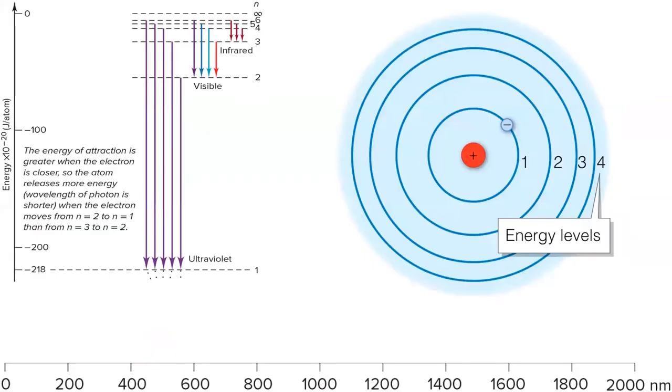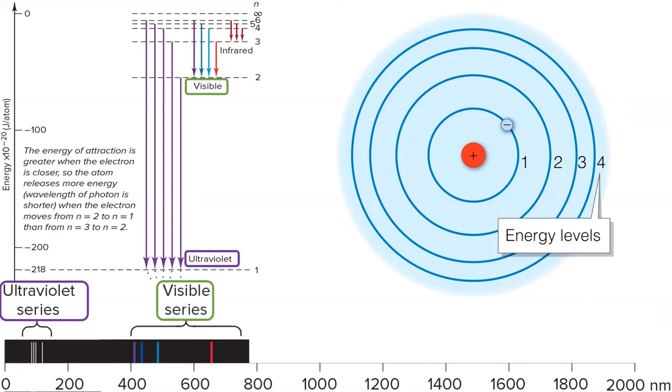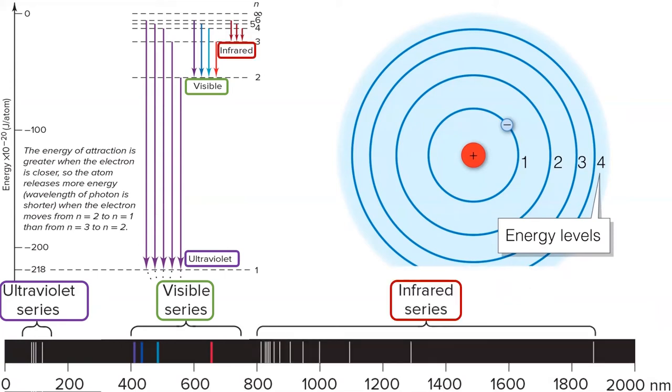There are actually many, many more colors that a hydrogen atom can emit, but puny humans are only able to see the ones in the visible region of the spectrum. If the electron falls all the way down to the ground state, it emits an ultraviolet photon of light. If the electron falls to the second energy level, it emits a visible photon of light. If the electron falls to the third energy level, it emits an infrared photon.